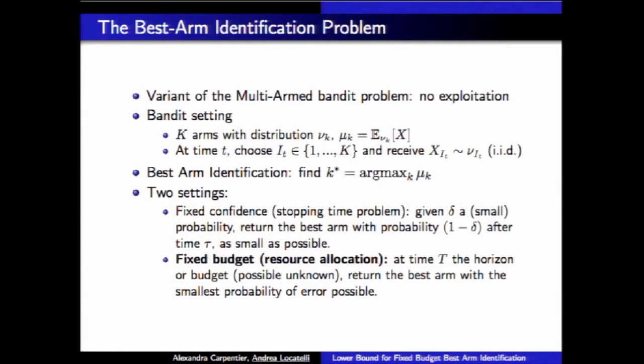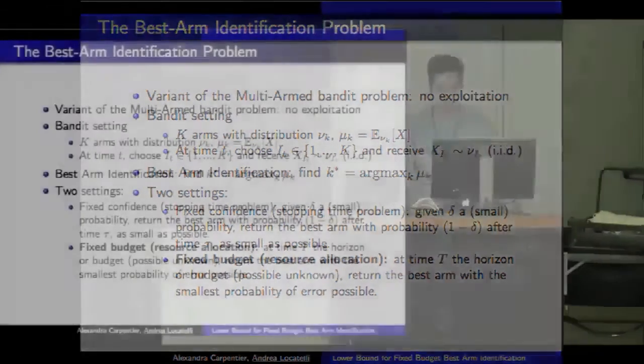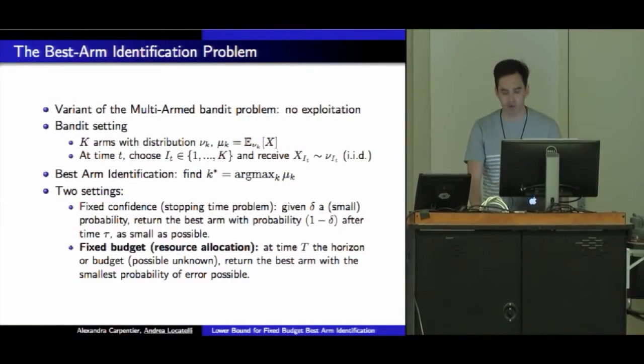Best arm identification, as you're already familiar with, has the goal to find k star, the argmax of these means. There are two different settings. The first one we've talked about is the fixed confidence setting, a stopping time problem. The one I'm concerned with is called fixed budget, a resource allocation problem with a constraint budget or horizon capital T.